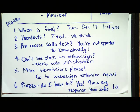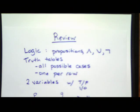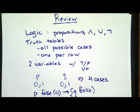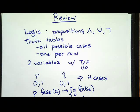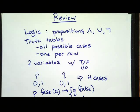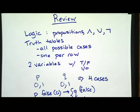So the next thing we're going to do is review what we talked about last time. We started talking about logic — propositions, OR, and NOT. We talked about truth tables, that they list all possible combinations of your variables. Those cases are like snapshots of the universe, and one snapshot exists on each row. We did truth tables with two variables, each with two values represented by zeros and ones.